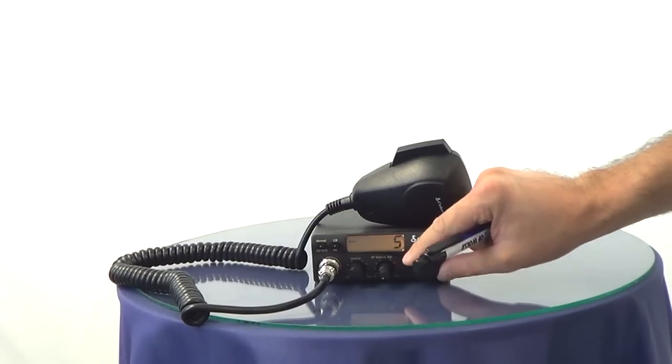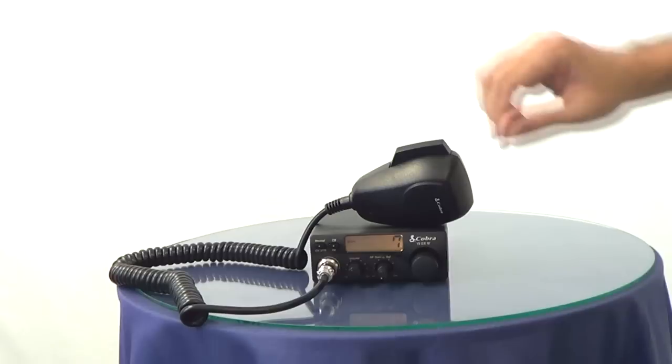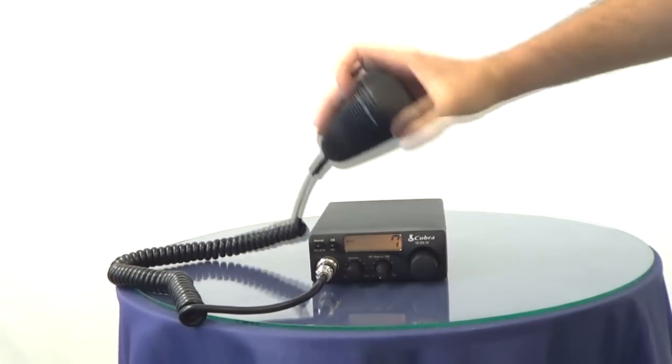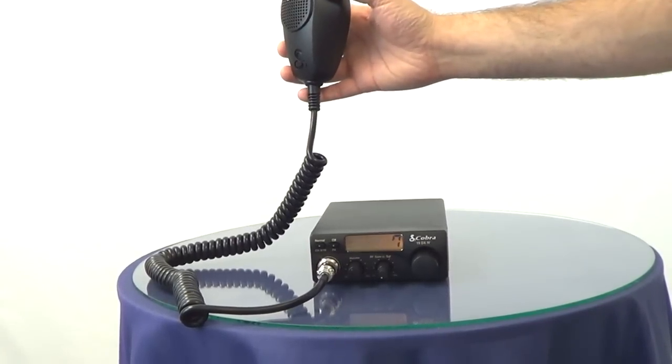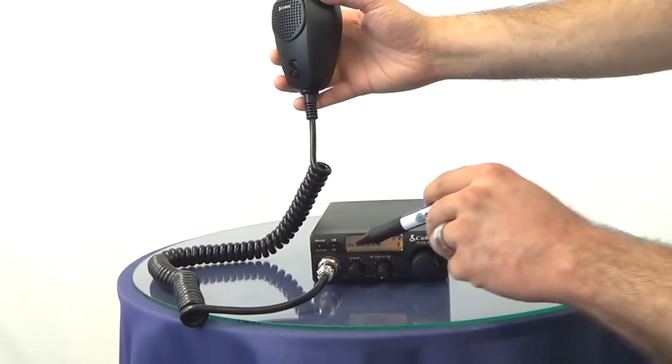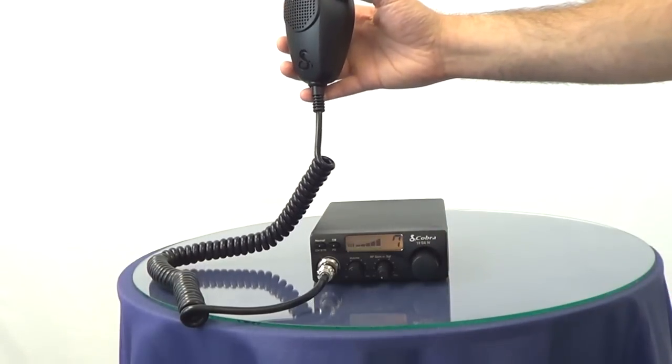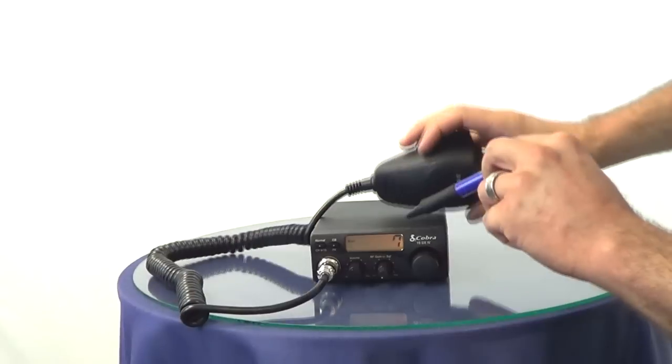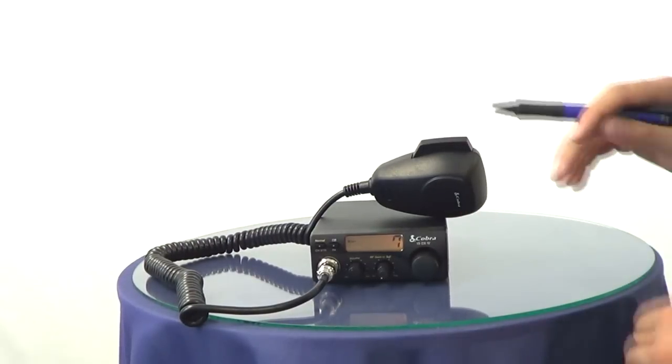Here's the channel selector. The meter here shows you transmit. It has a power meter here but that's always just going to go all the way up. But you can see the channel output clearly here.